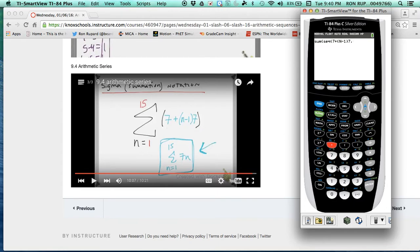And now that you have your explicit formula in there, hit comma, which is right there. And then put N, comma, and then put your lower limit and your upper limit. So 1, comma, 15.